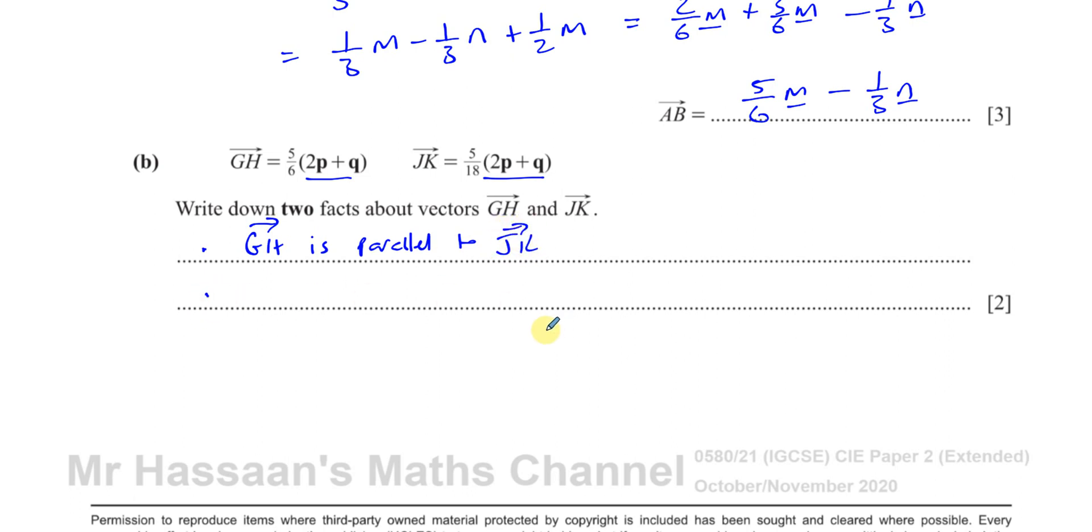The second point we can note is we can compare their sizes because this is five sixths and this is five eighteenths. So G to H, of course, is longer, has a bigger magnitude than J to K. We can even find what that magnitude is. I can say that if I multiply both sides by six here I've got six times G to H is equal to five times 2P plus Q. And here I have eighteen times J to K is equal to five times 2P plus Q. So now what we can say here is that six times G to H must be the same as eighteen times J to K.